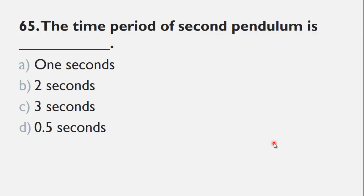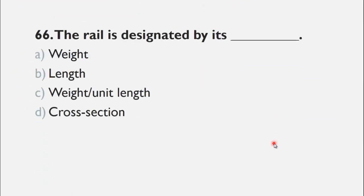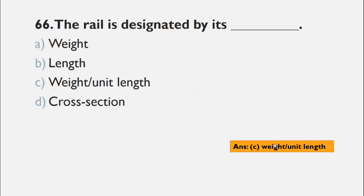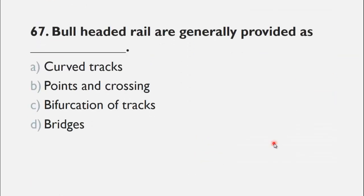MCQ number 66 is: The rail is designated by its ___. A) weight, B) length, C) unit weight per unit length, and D) cross section. So the right choice for this question is C, weight per unit length.